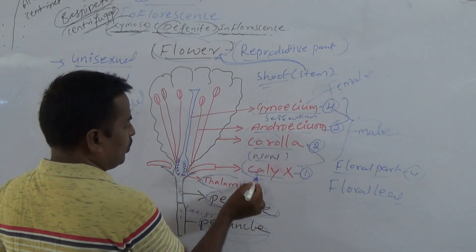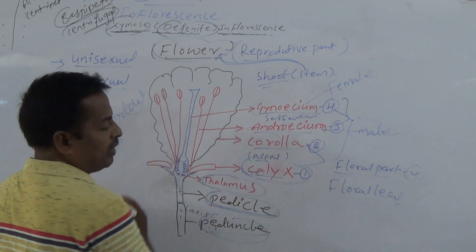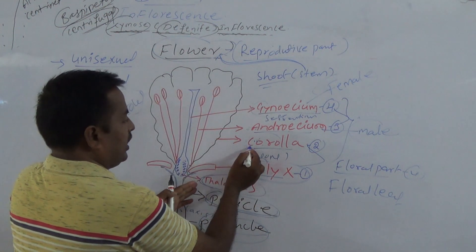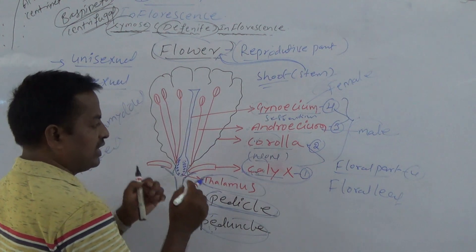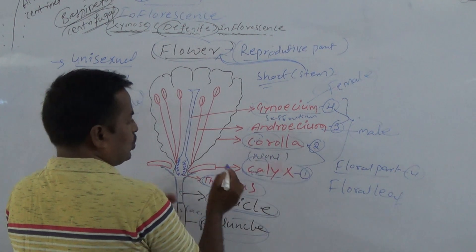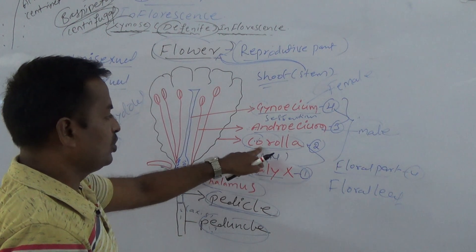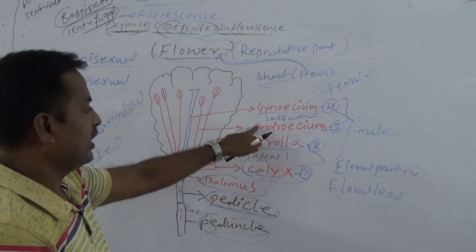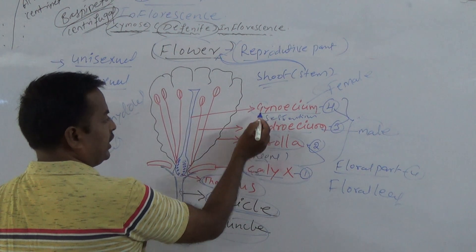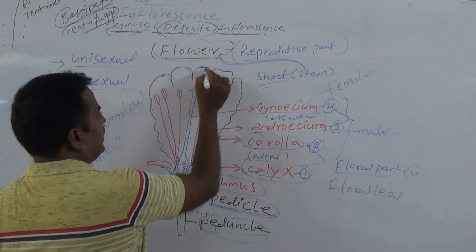What is the function of Calyx and Corolla? Calyx is the protective layer of the floral parts — all floral parts are protected by Calyx. Corolla is very beautiful and very attractive. The Corolla attracts insects for pollination. Androecium is the male part and Gynoecium is the female part. The Corolla attracts insects, and Calyx is the protective layer of the flower.